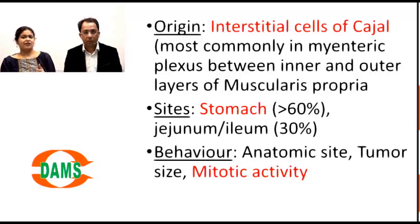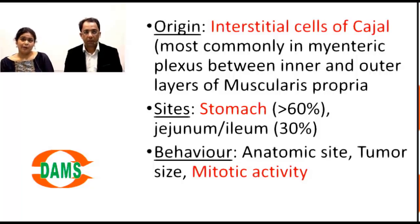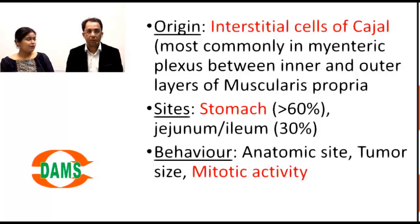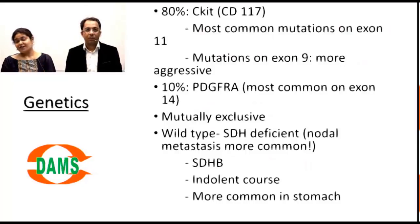Originally GIST was classified under leiomyosarcoma, thought to arise from muscle cells. However, it actually arises from the interstitial cells of Cajal — pacemaker cells in the myenteric plexus within the muscularis propria. The stomach accounts for approximately 60% of cases. Tumor behavior is determined by three factors: anatomical site, size (more than 5 cm is poor prognosis), and mitotic activity counted per 50 high-power fields.